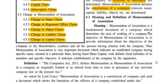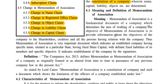The meaning and definition of Memorandum of Association: MOA is a fundamental document of a company which determines the area of working. The objective of MOA is to provide information about the objectives of the company to the shareholders, creditors, and all persons who have a relation with the company. It indicates an established company having a specific name, capital with definite fixed liabilities of its members, and specific objectives.